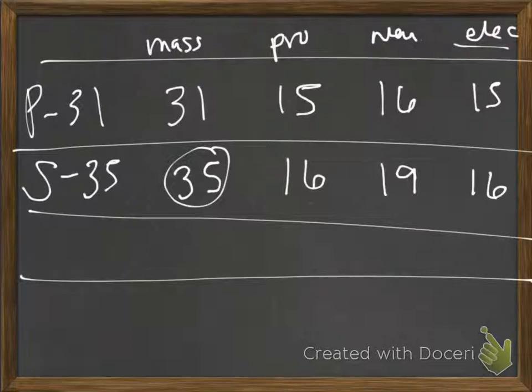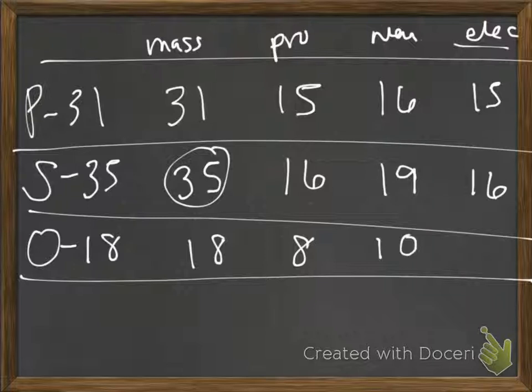Okay, the last one, you were given the number of protons and the number of neutrons. So 8 and 10. Well, the 8 gives you the identity. It tells you that this has got to be oxygen. And the 8 plus 10 gives you the mass, so it tells you that this is oxygen-18. And because we have 8 protons, we know we have to have 8 electrons if this thing is going to be electrically neutral.